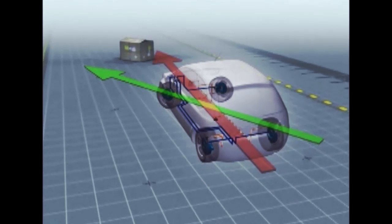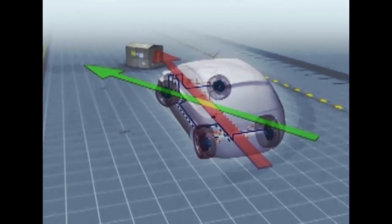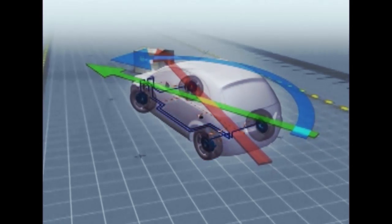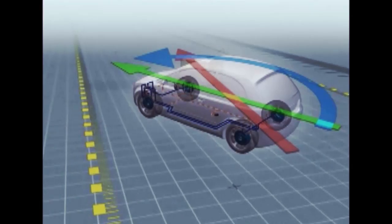That is, it's drifting straight ahead toward the obstacle. In split seconds, ESC brakes the left rear wheel very briefly and sharply. This produces the desired counteracting force so that the car responds as the driver intended.